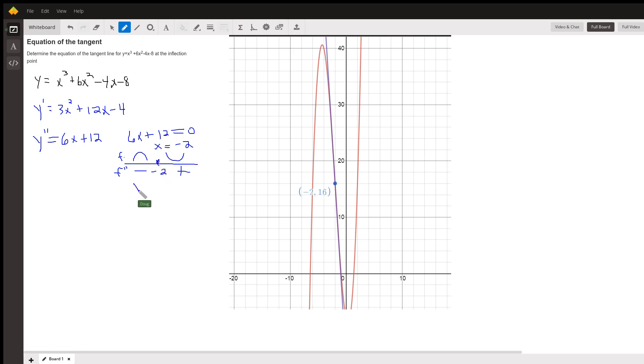Well, we have to find y of negative 2 to find out where that point is. And it turns out if you put negative 2 into this original function, you do get a y value of 16. So negative 2, 16, that's the point of inflection.